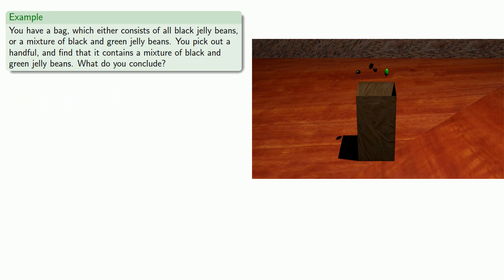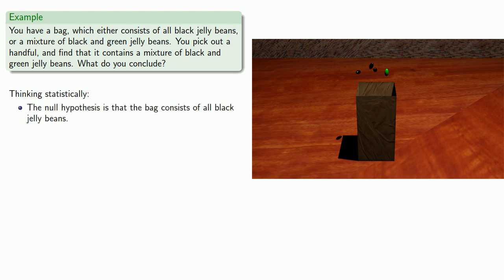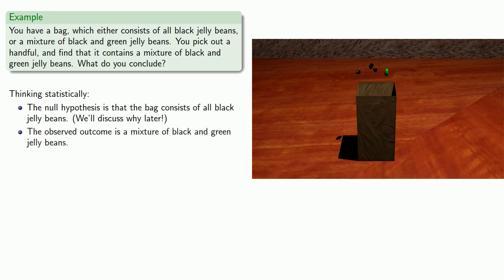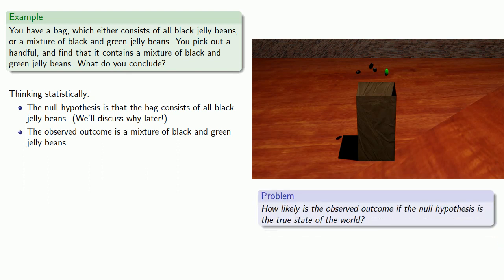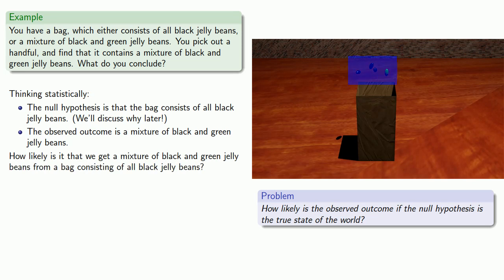Any normal person would say that we have the bag of green and black jelly beans, but statisticians are not normal people. So let's think about this statistically. The null hypothesis is that the bag consists of all black jelly beans. The observed outcome is a handful of black and green jelly beans. The problem we want to answer is: how likely is it that we get a mixture of black and green jelly beans from a bag consisting of all black jelly beans?